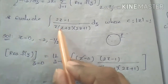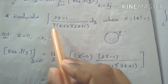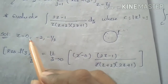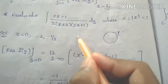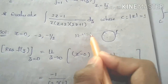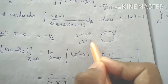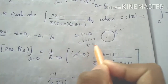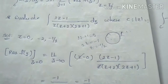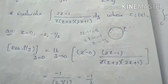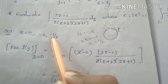The poles are found by setting the denominator equal to zero. So z equals 0, z equals minus 2, and from 2z plus 1 equals 0, we get 2z equals minus 1, so z equals minus 1 by 2. Therefore the poles are z equals 0, minus 2, and minus 1 by 2.